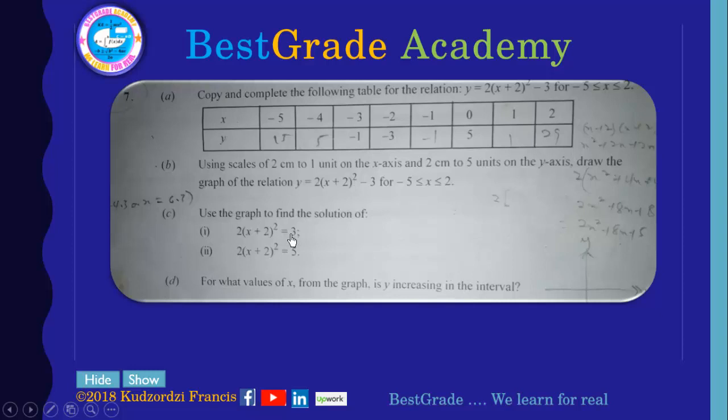And use the graph to find a solution of 2 into bracket x plus 1 x plus 2 bracket close all squared equals 3, then 2 all into bracket x plus 2 all squared equals 5. For what values of x from the graph is y increasing in the interval?